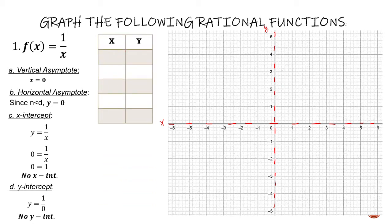So what do we base the table of values on? How do we get the x values? We get x values that are close to the vertical asymptote. We are going to get numbers from the left and from the right of the asymptote, so that we can determine the behavior of the graph.